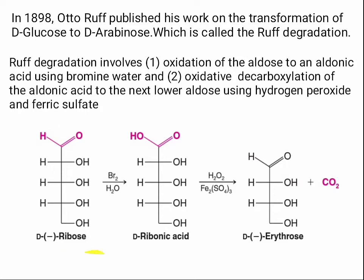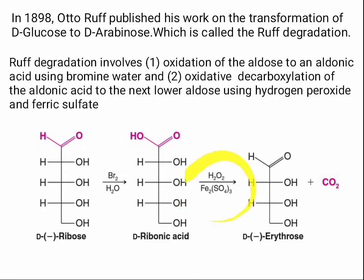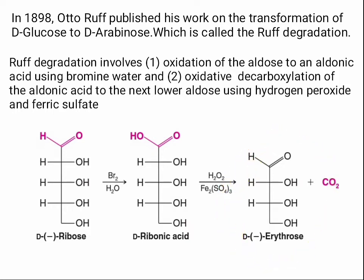He took D-ribose and converted it to D-ribonic acid by treating it with bromine water. The CHO group is converted into a COOH group. Then, using hydrogen peroxide and ferric sulfate — Fe₂(SO₄)₃ — he obtained the structure of D-arabinose.